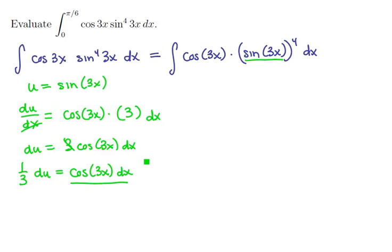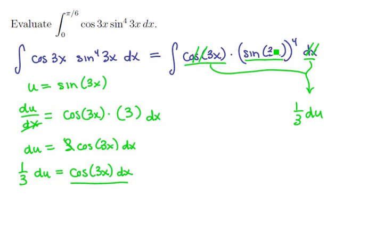Does it fit? Just take a quick look — it's the bookends of the integral: cosine 3x times dx. So let's replace these two pieces with (1/3) du. The remaining sine of 3x is replaced with u, so we have u to the fourth. This gives us the integral of (1/3) u to the fourth du.